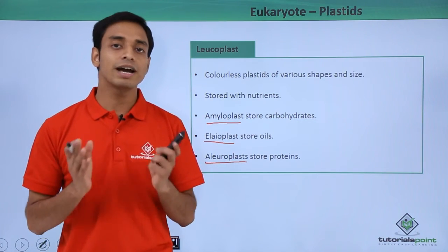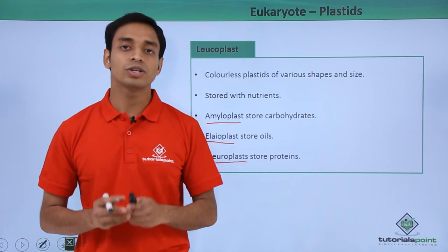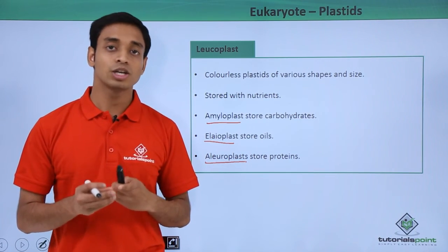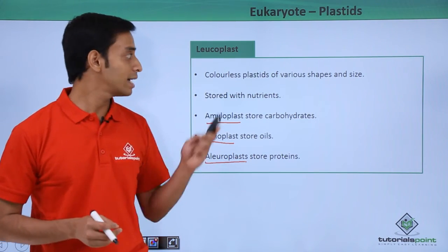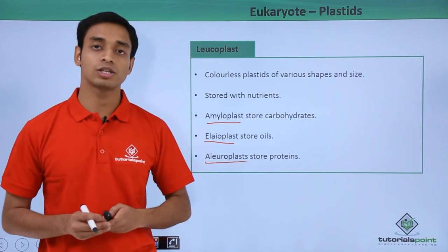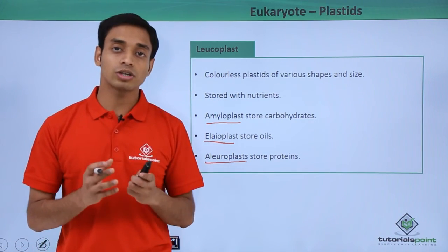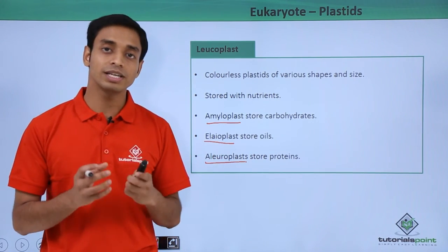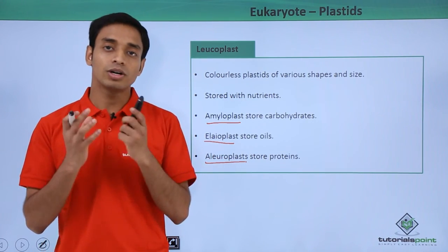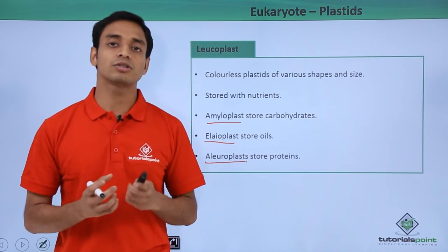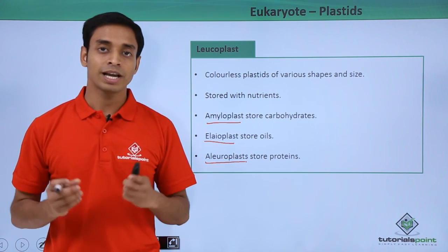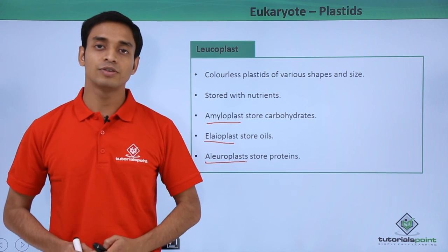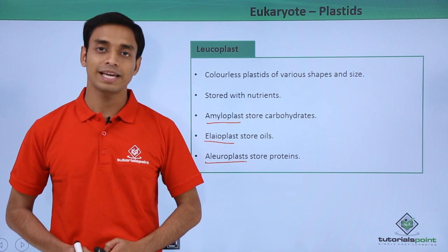In this video we have talked about the cellular organelles of the eukaryotic cells known as plastids. We have covered the three different types: chloroplasts, chromoplasts, and leucoplasts. We also discussed the structural details of the chloroplast and the different structures present inside it. I hope you understood and liked this video. Thank you.